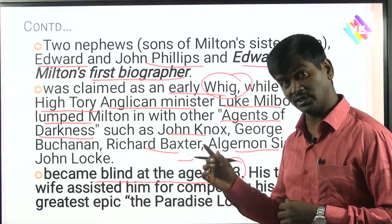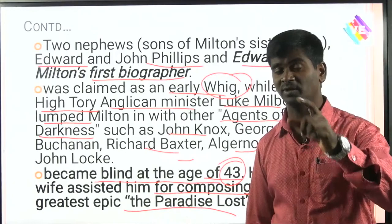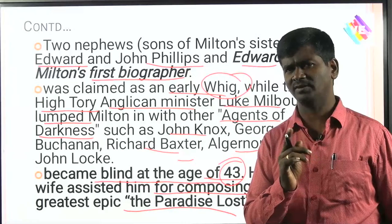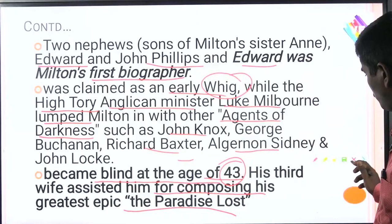Milton's third wife assisted him in composing his greatest epic, Paradise Lost. Who is the third wife of John Milton? Elizabeth Minshull — remember this. These are NET, SET, and JLDL examination questions: at what age did Milton become blind? Who assisted him while writing Paradise Lost and Paradise Regained? His third wife, Elizabeth Minshull. And who is the first biographer? Edward Phillips.